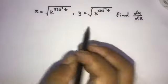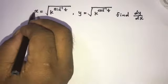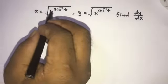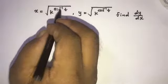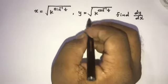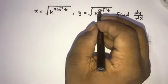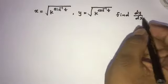Today we're going to solve another differentiation question. The problem is: x equals square root of k to the inverse sine of t, and y equals square root of k to the inverse cosine of t. We need to find dy by dx.